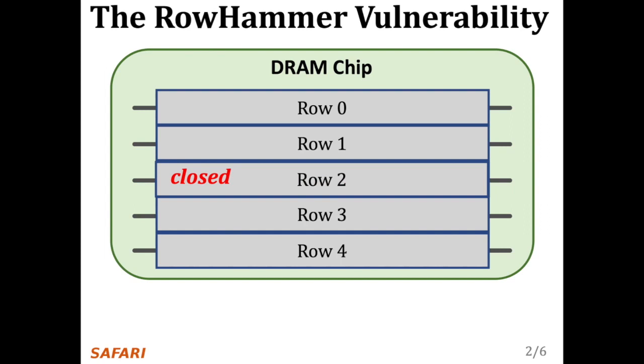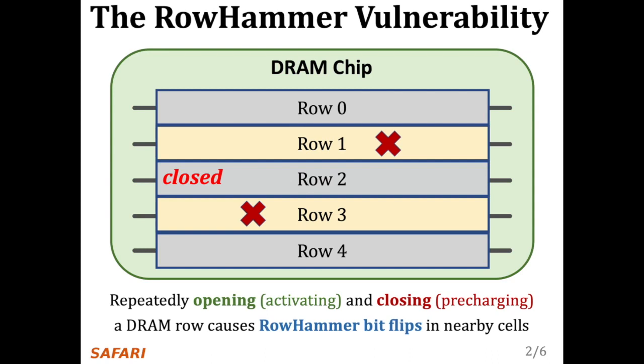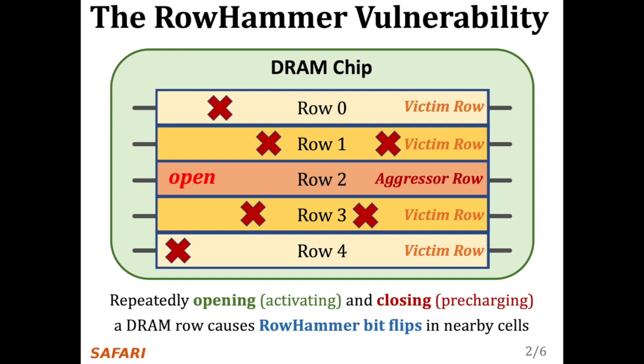Continuing to access the same row results in even more failures in nearby rows, and this phenomenon is known as rowhammer. We refer to the rapidly accessed row as an aggressor row and the rows containing bitflips as victim rows.